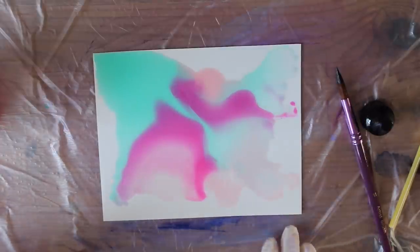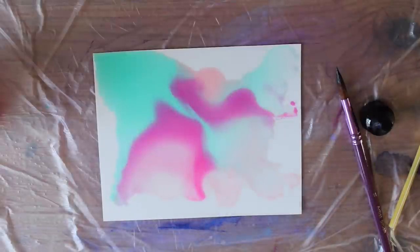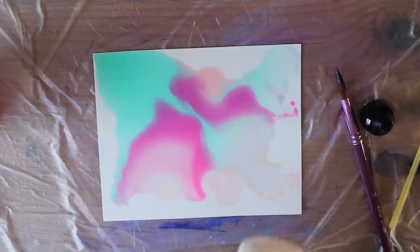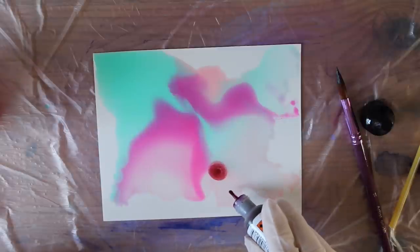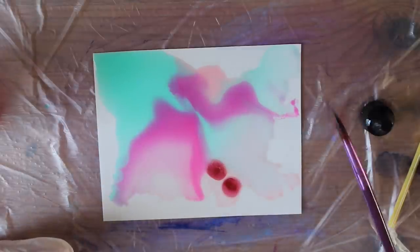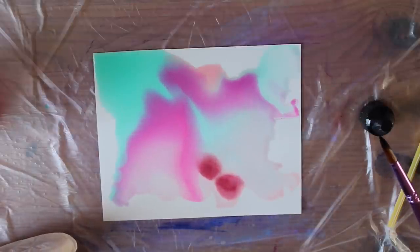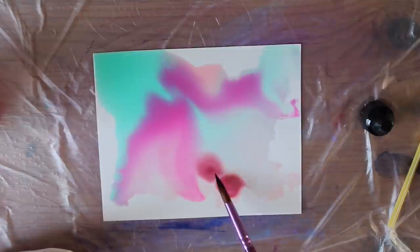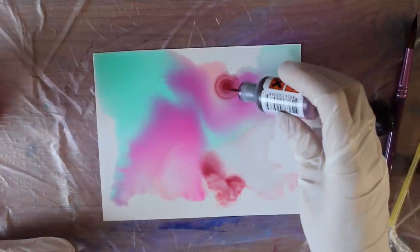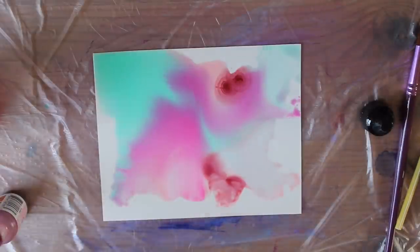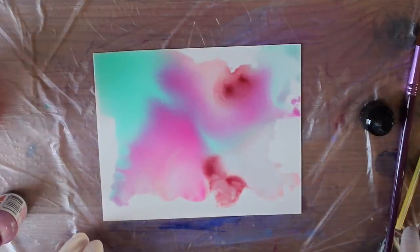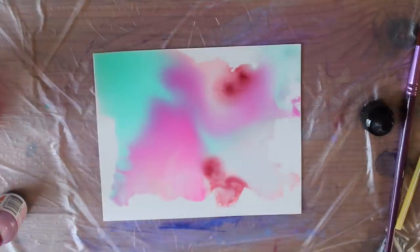Okay, so once I'm happy with the background bit, I'm going to go in with the actual alcohol inks and use them from their direct concentrate. Just give it a little bit of a blur. It will start to blend out a bit.